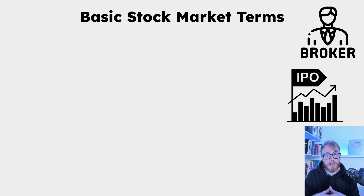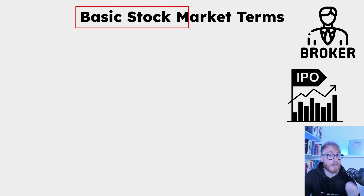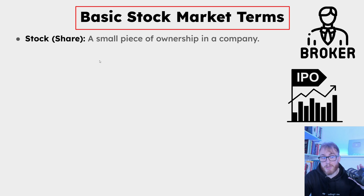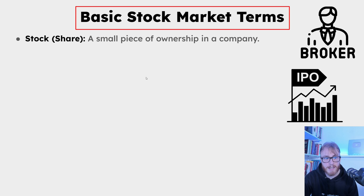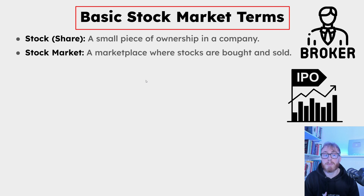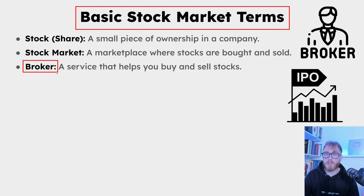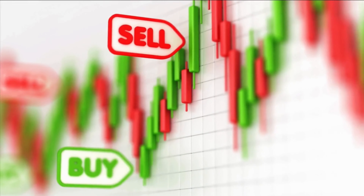Now that you know what a stock is, let's look at some important stock market terms. A stock is a small piece of ownership in a company. A stock market is a marketplace where stocks are bought and sold. Next, a broker is a service that helps you buy and sell stocks — just as you need help selling a house, you also need a service that helps you find a buyer for your stock.